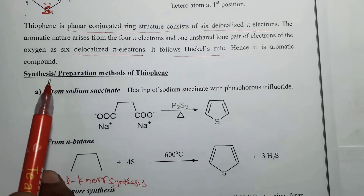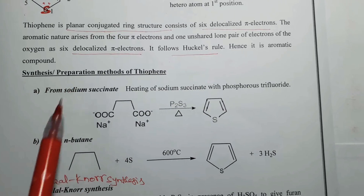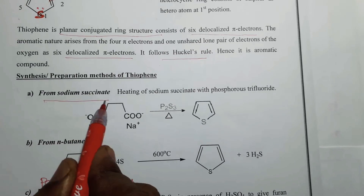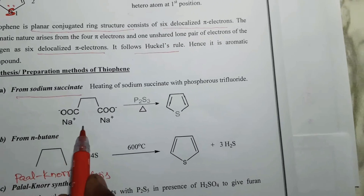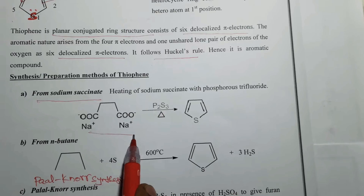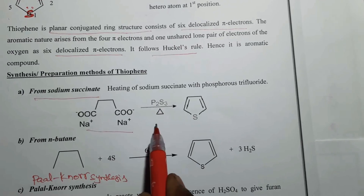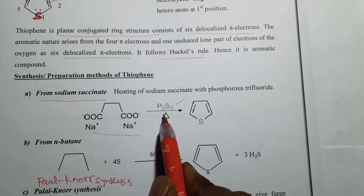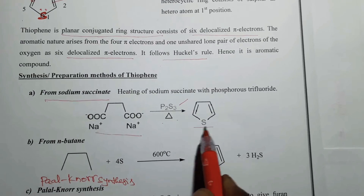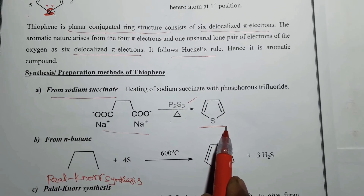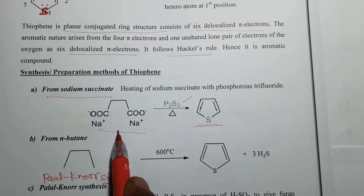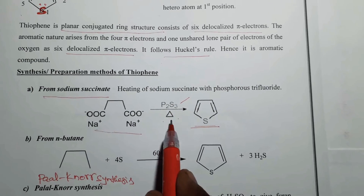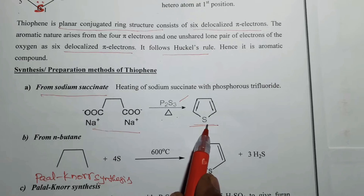Synthesis and preparation methods of thiophene. First, preparation from sodium succinate. Sodium succinate, on heating with phosphorus trifluoride, gives thiophene.